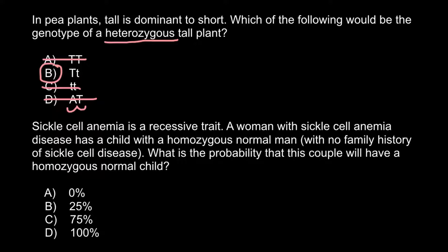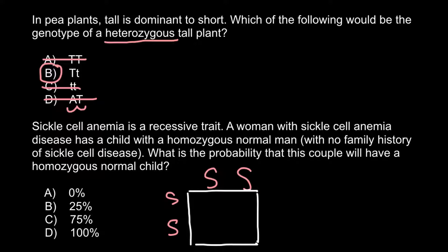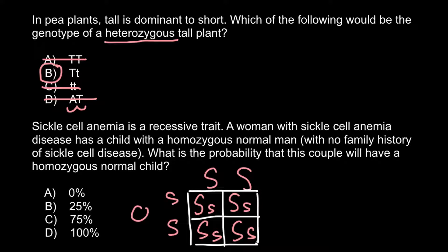Let's build two Punnett squares. First, the proposal that the female is homozygous recessive: small s, small s on the side, and capital S, capital S for her husband on top. After building the Punnett square, every offspring would be capital S, small s — all heterozygous carriers. This is the female side and this is the male side.